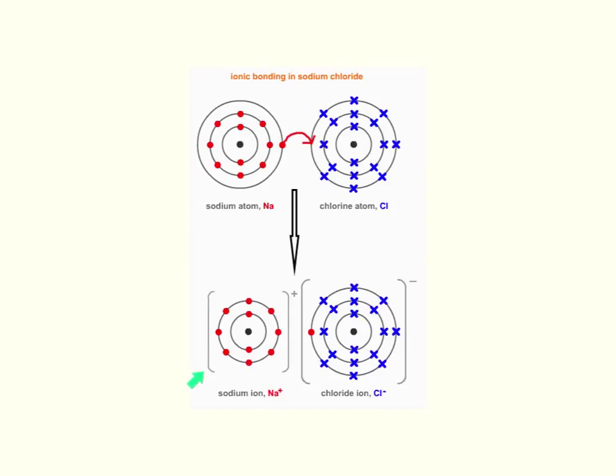It's got one more proton in its nucleus than electrons in the shells, so it gains a positive charge. The chloride ion now has this extra electron—still got 17 protons in the nucleus but it's got 18 electrons—so it becomes negatively charged.